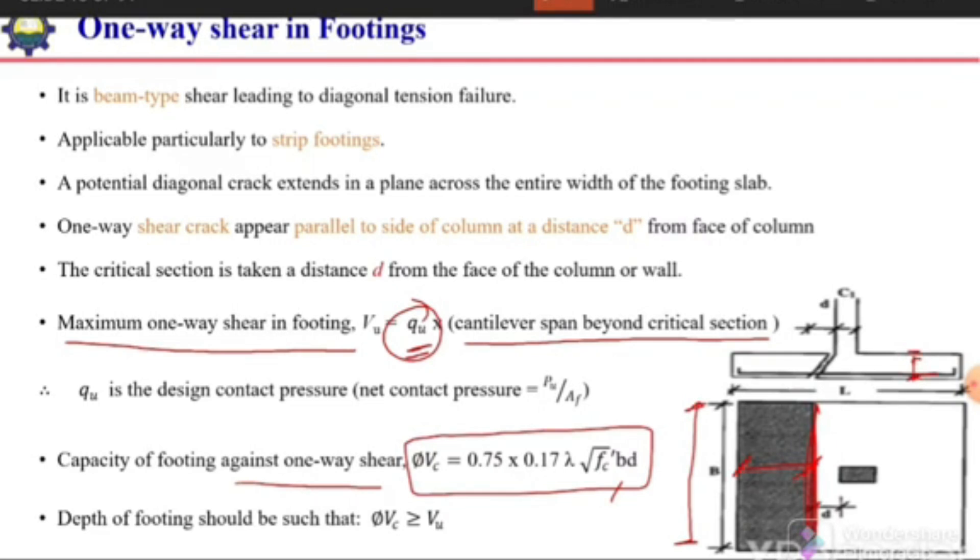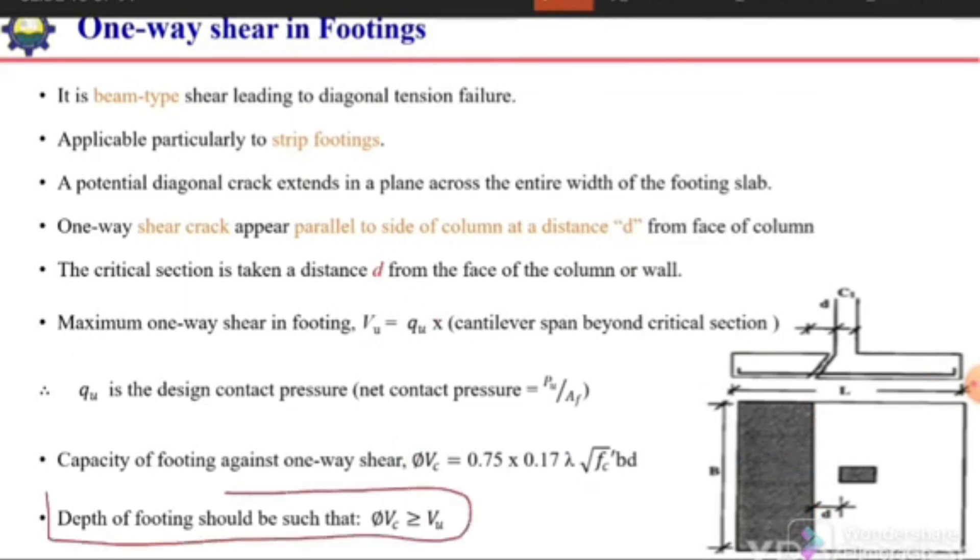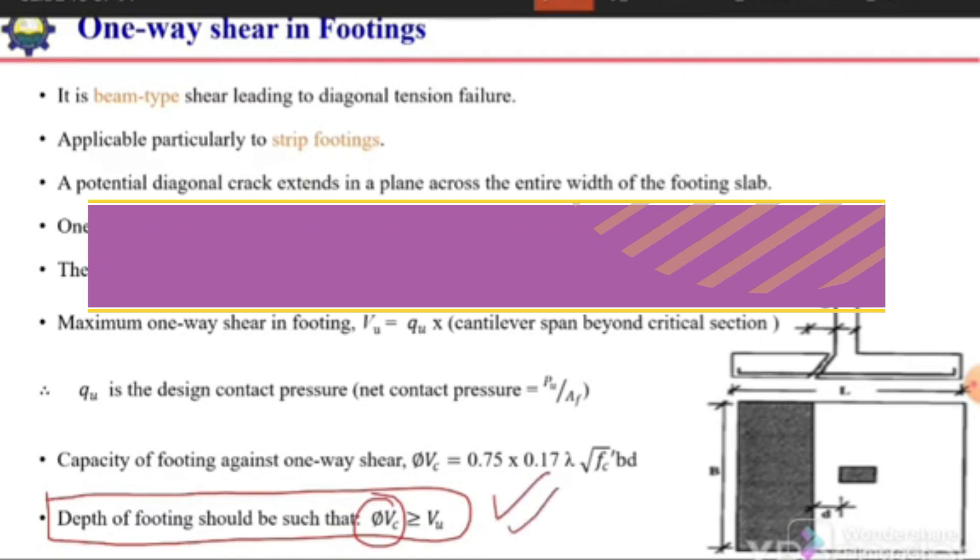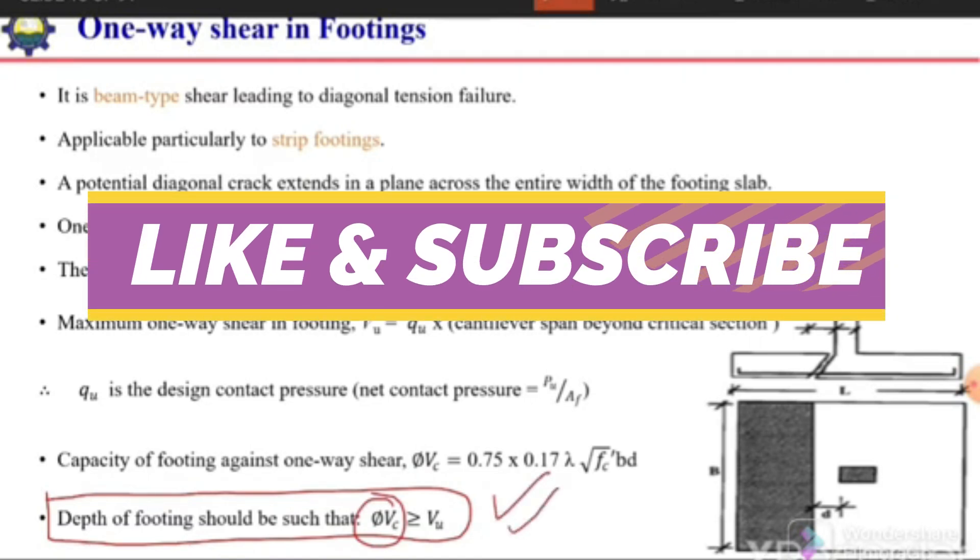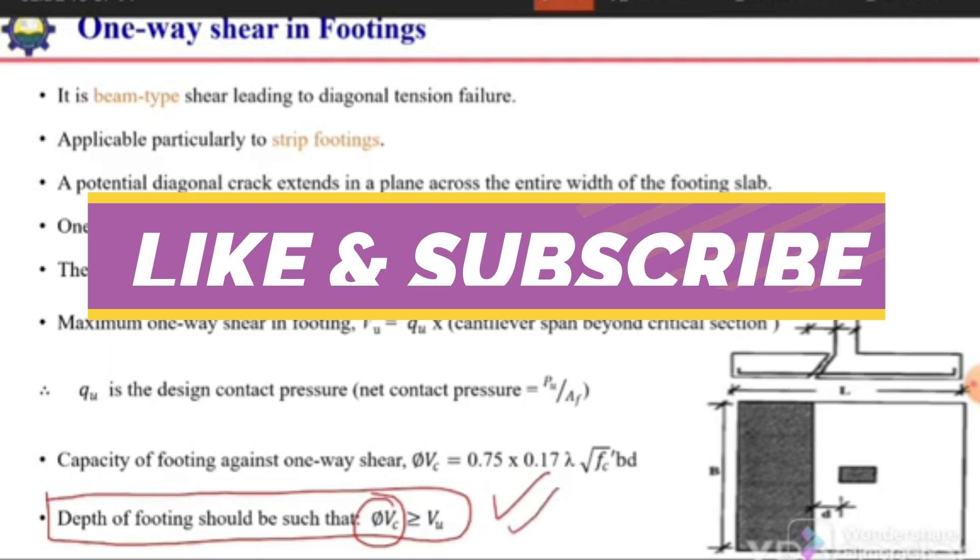To ensure safety against one-way shear, the capacity of the slab against one-way shear should be more than the applied shear. If this equation is satisfied, then the foundation will be safe against one-way shear.